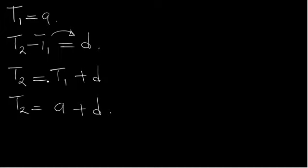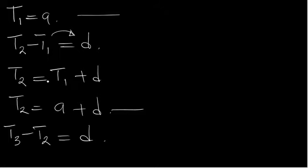The common difference also applies to the third term: the third term minus the second term is equal to the common difference. We assumed the first term to be A, and the second term we have gotten in terms of A, which is A plus D — that's equation 2.